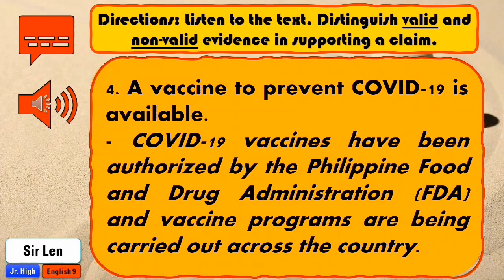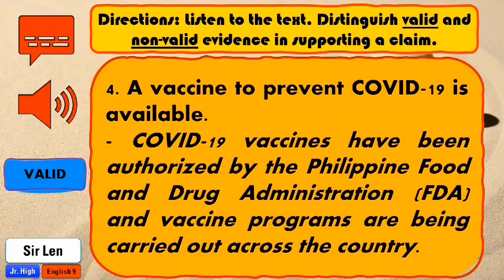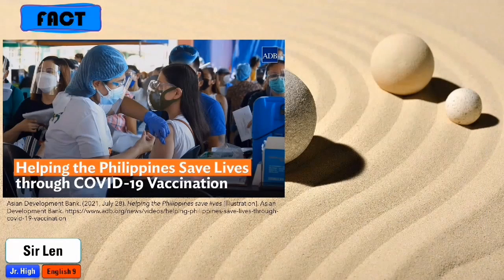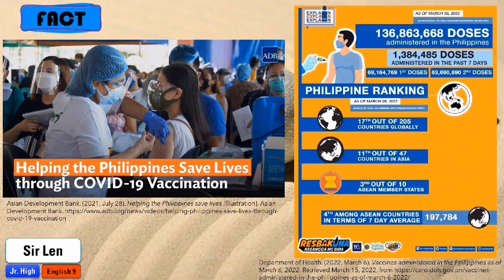A vaccine to prevent COVID-19 is available. COVID-19 vaccines have been authorized by the Philippine Food and Drug Administration (FDA), and vaccine programs are being carried out across the country. Time is up. Thank you for answering. If your answer is valid, that's brilliant. Vaccines save millions of lives each year. Vaccines work by training and preparing the body's natural defenses — the immune system — to recognize and fight off the viruses and bacteria they target. After vaccination, if the body is later exposed to those disease-causing germs, the body is immediately ready to destroy them, preventing illness.